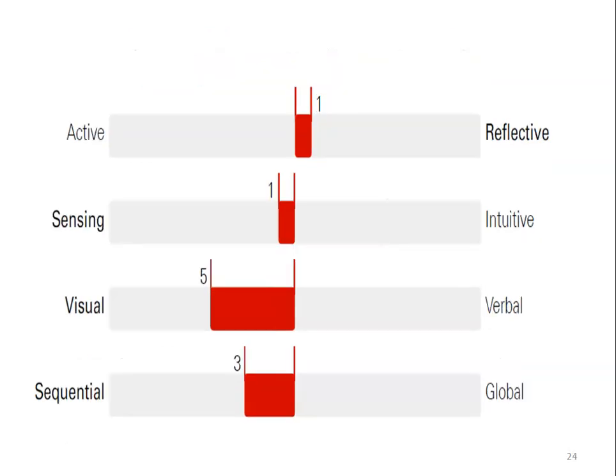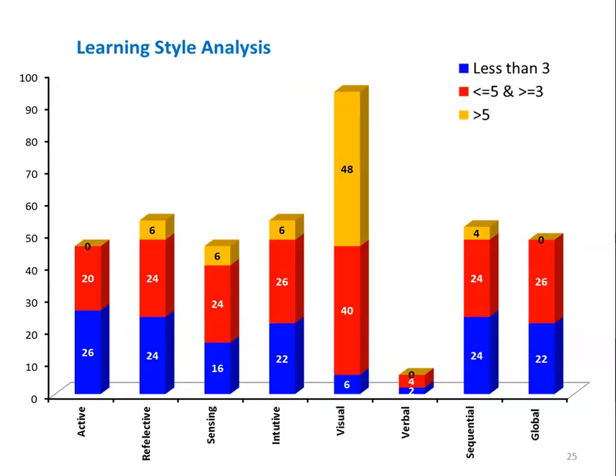Here is another example — this student is better balanced across learning dimensions. And this is consolidated information about a class of 60 students. If you look here, the yellow bar shows 48 students — that is 48% — are on the visual side. More students are on the visual side, meaning more learning happens visually.